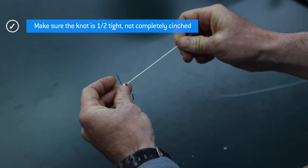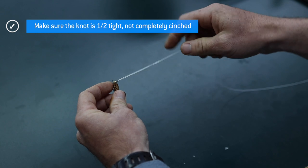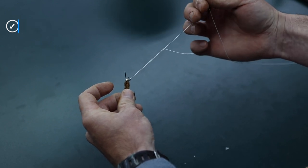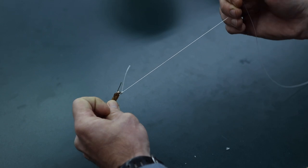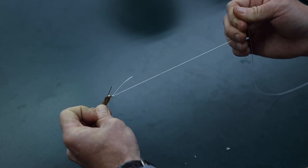You don't want to cinch all the way, but just where it's half tight. Now I'm going to go ahead and take the leader and pull the leader so that the knot slides right down to the eye of the hook, and boom. There is your 1620 knot.